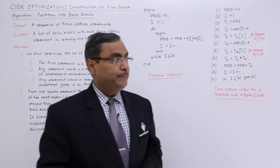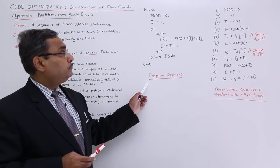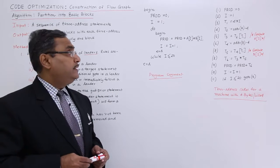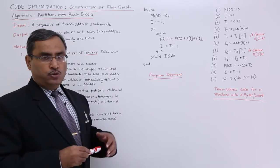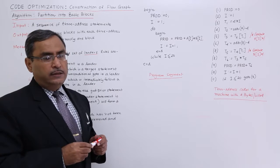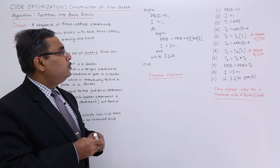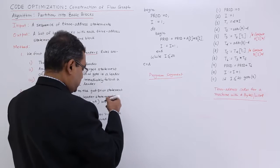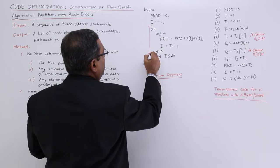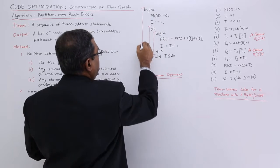Let us go through one example. This is a sample program segment. It begins with product equal to 0 and i equal to 1. Before the loop, these two variables are initialized, and then there is a do-begin block structure with several blocks here.